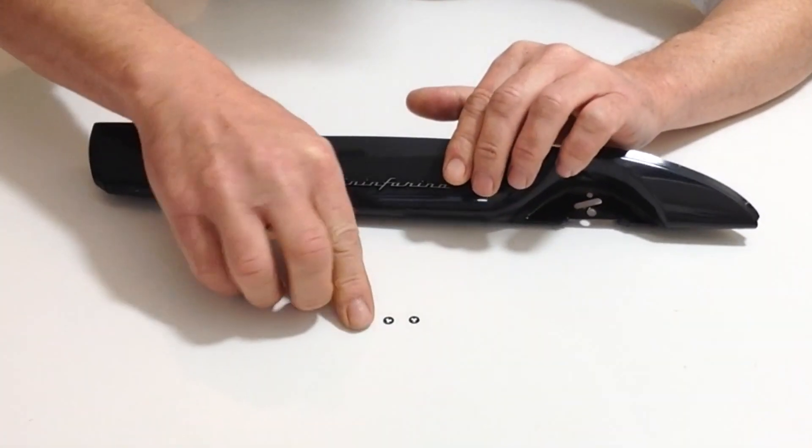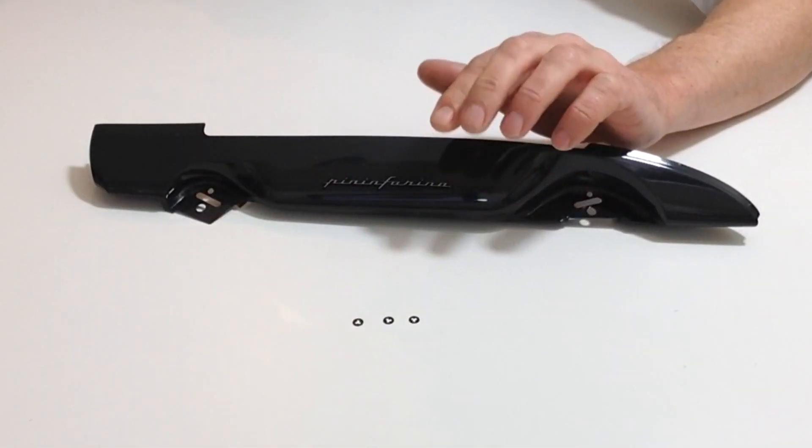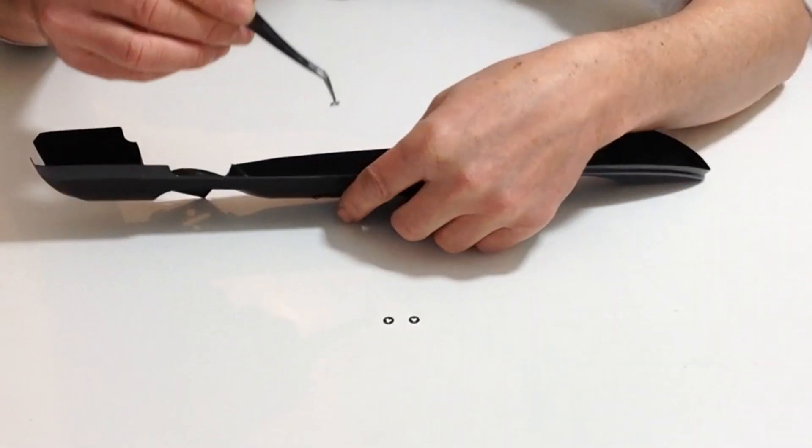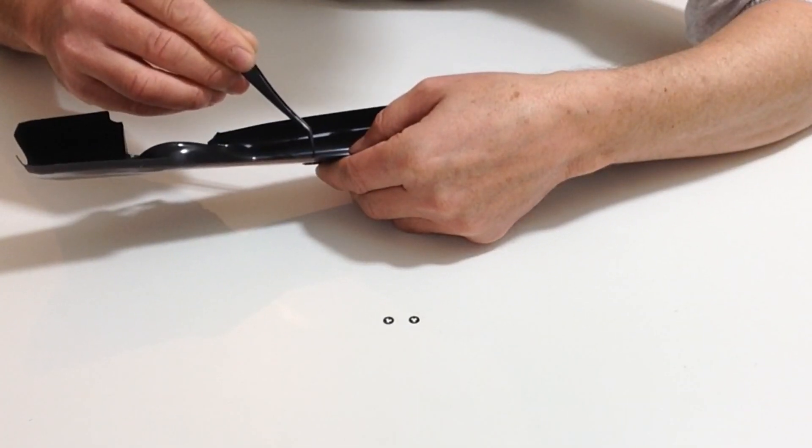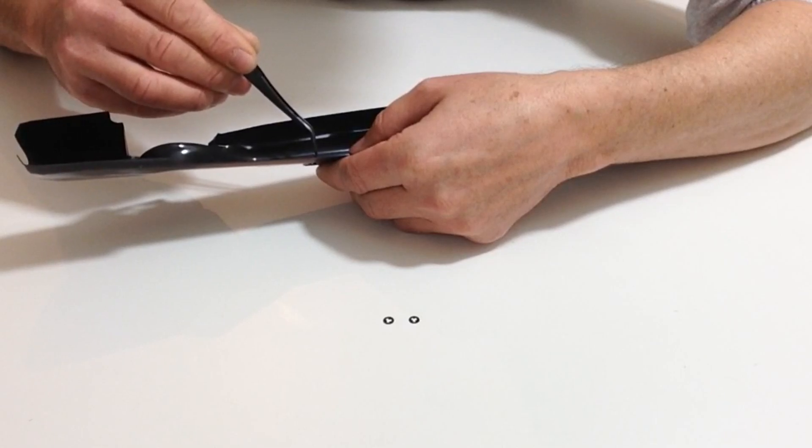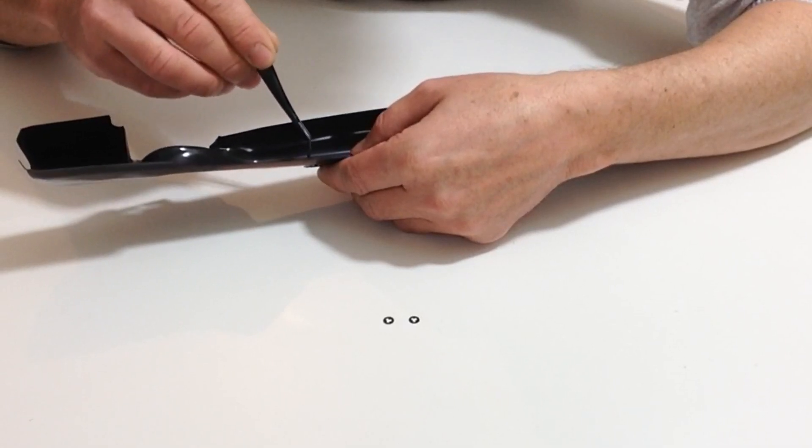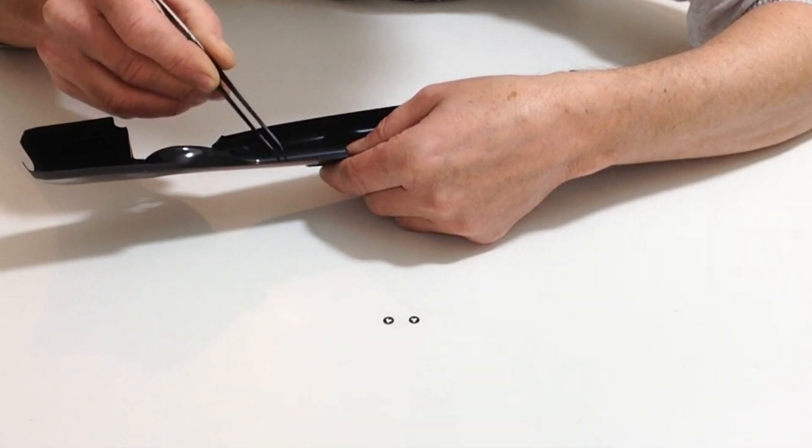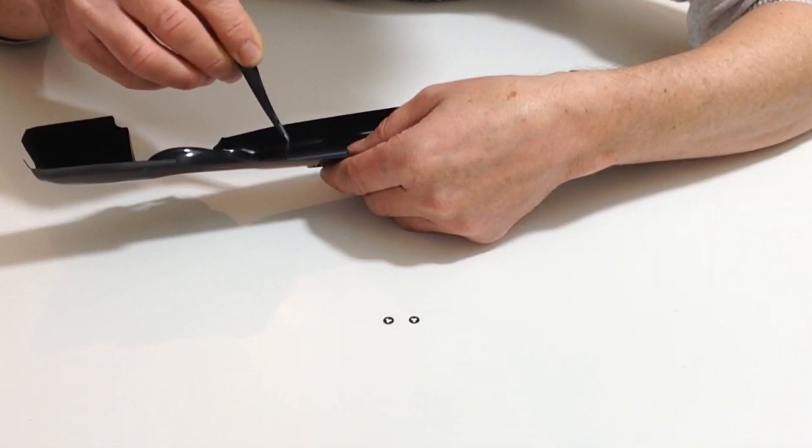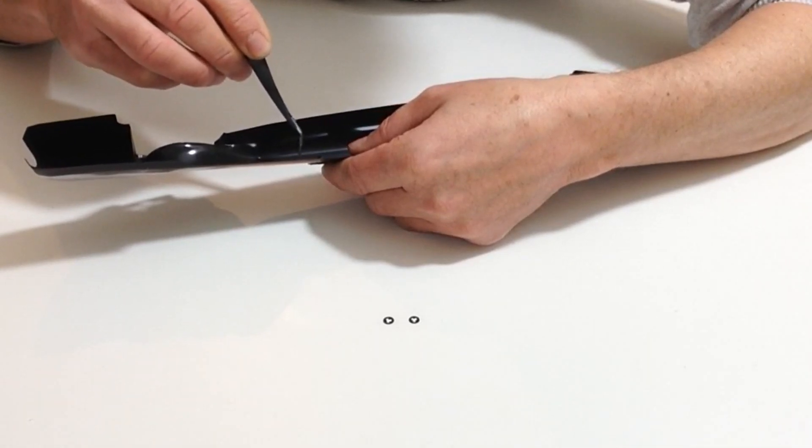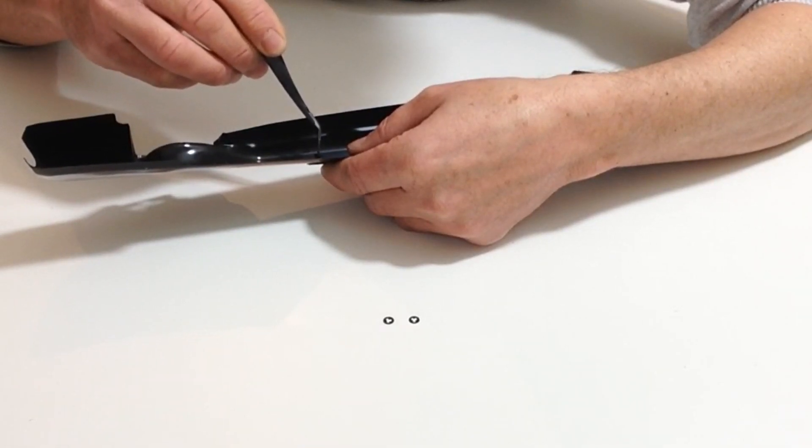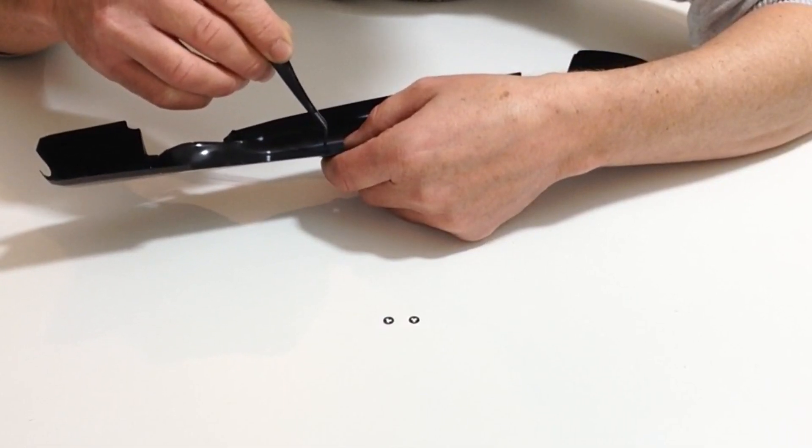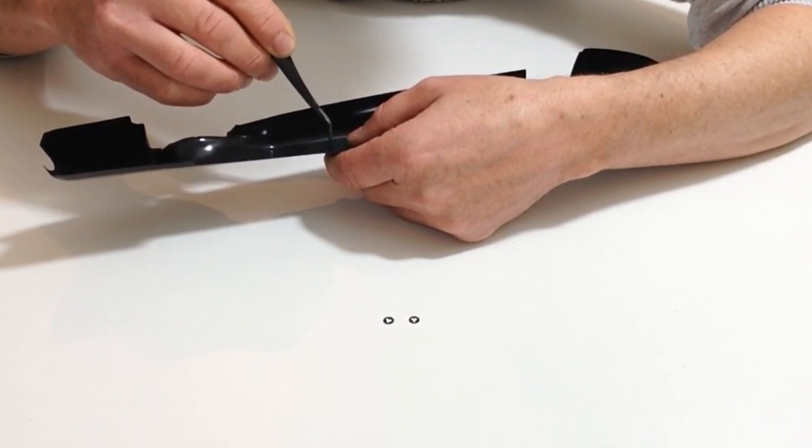With the small washers, you might need a pair of tweezers for this. Turn it over, place it over the badge and press down. You'll notice that the washer itself has raised edges. They should be facing towards you when you push it down.